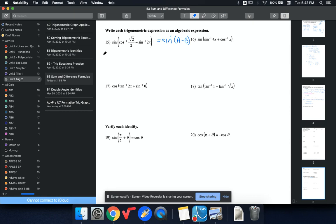And then I know from my formula that that's going to be sine A cos B minus sine B cos A.